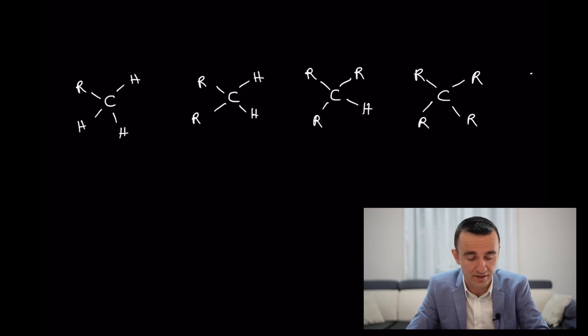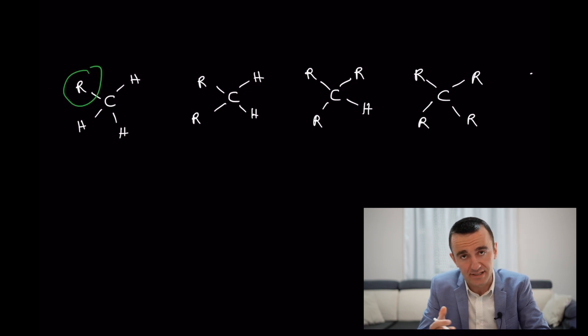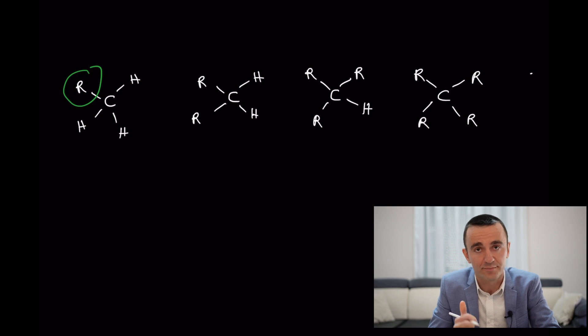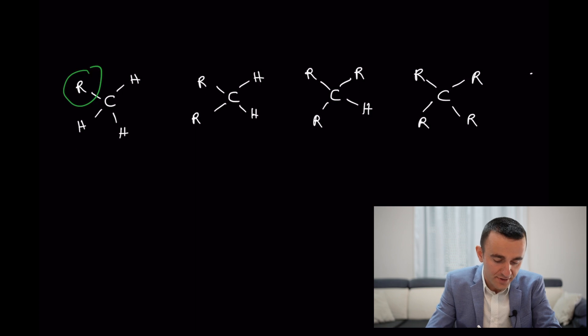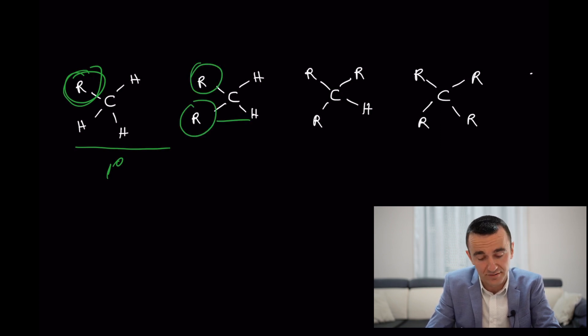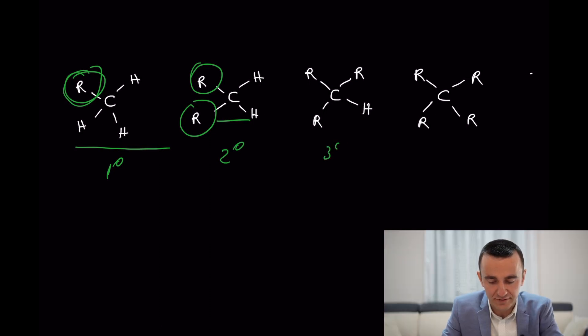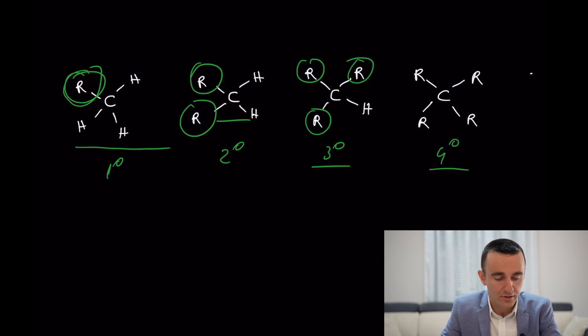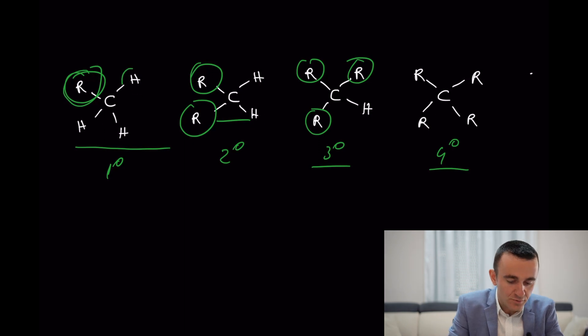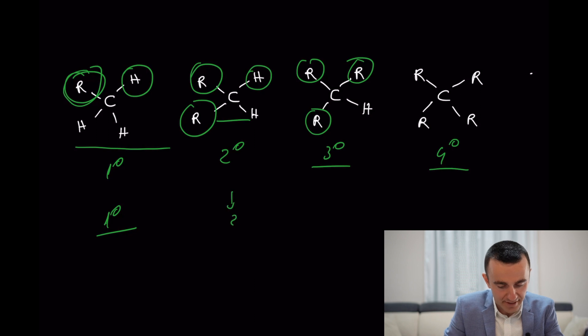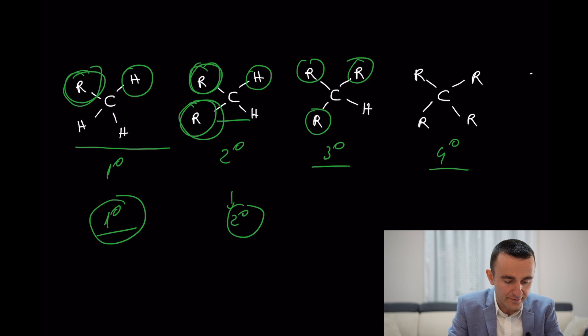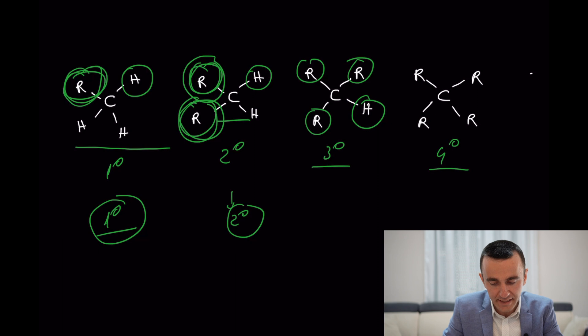Carbon can be classified as primary, secondary, tertiary, or quaternary carbon, where R represents the rest of the molecule. A primary carbon is connected to one other carbon; secondary to two; tertiary to three; quaternary to four other carbons. The same analogy applies to hydrogens — primary, secondary, and tertiary hydrogens. The question is: do we have a quaternary hydrogen? Leave your answer in the comments below.